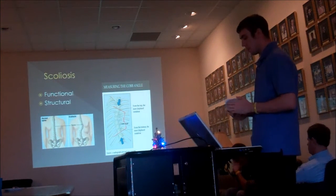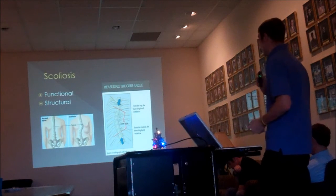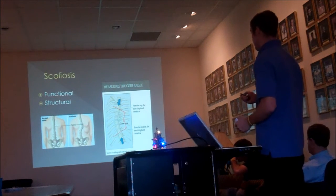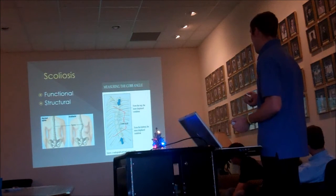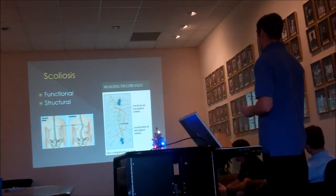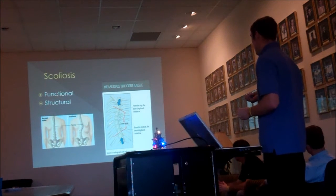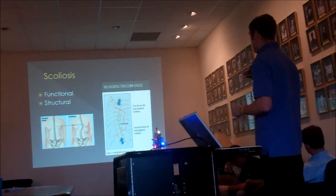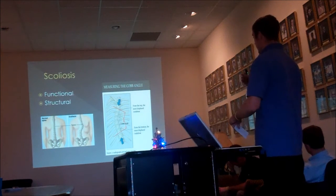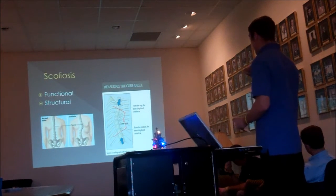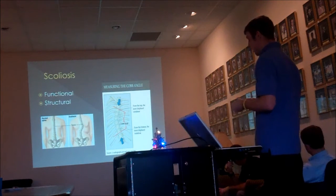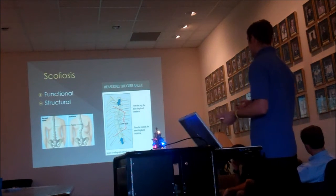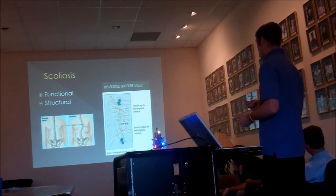One way to measure scoliosis — and I didn't find this until after the rehab — is something called the Cobb angle. What you want to do is find the apical vertebra, which is the middle and most displaced and rotated vertebra. Then you go superior and inferior to that vertebra and find the end transitional vertebrae, which are the least rotated and displaced.